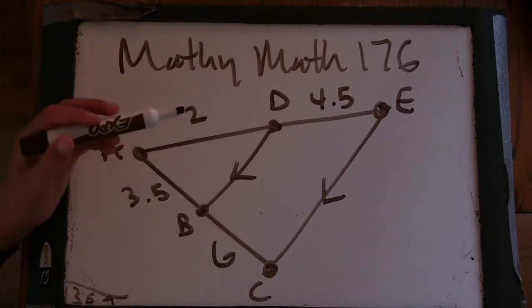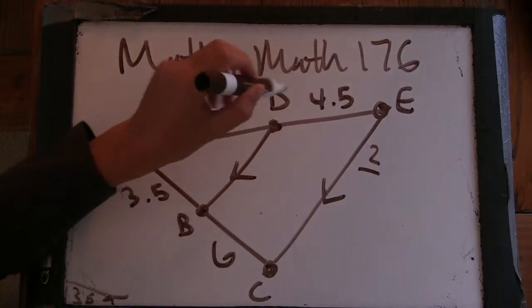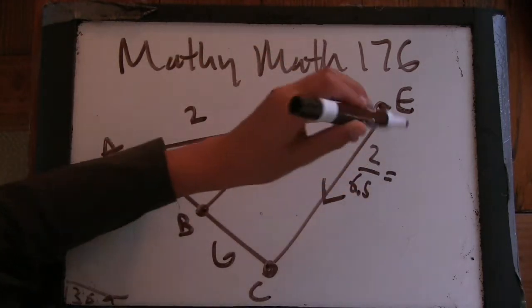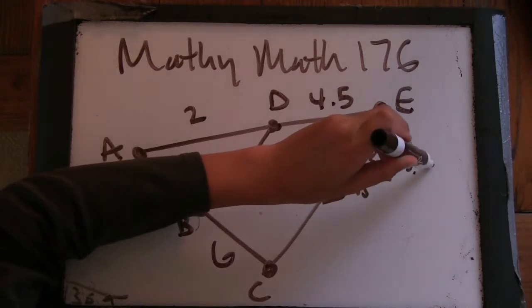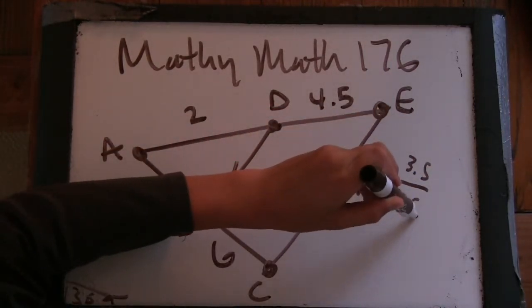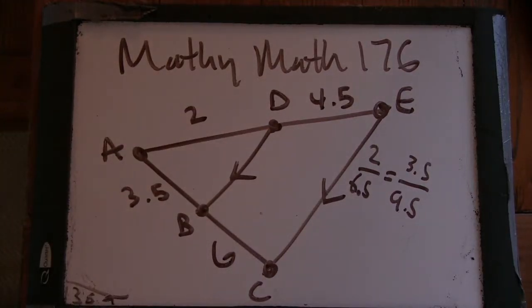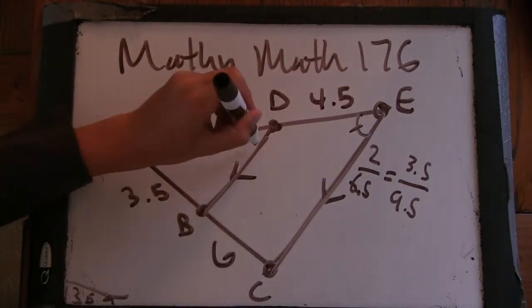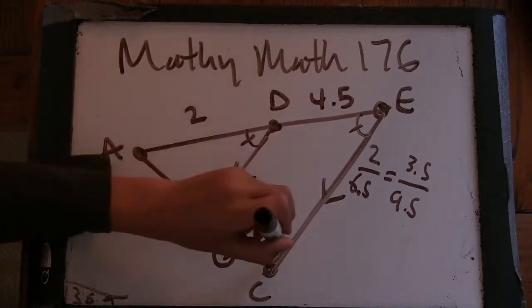So this should say that 2 to 6.5 is 3.5 to 9.5. Okay. Now why should it say that? Because we have side, angle, side. Okay, cool. Or angle, side, angle, I guess.